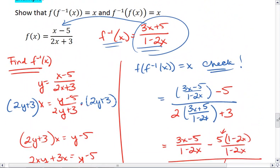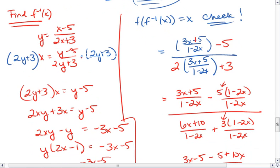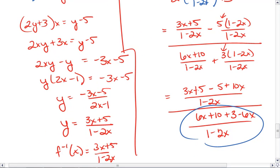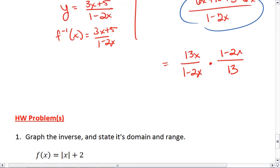Something went wrong. Oh, 3x plus 5. That's why. We get 3x over 1 minus 2x times 1 minus 2x over 13.